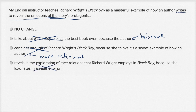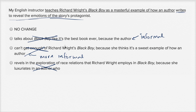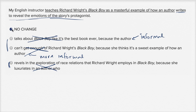The best tone is the original: My English instructor teaches Richard Wright's Black Boy as a masterful example of how an author writes to reveal the emotions of the story's protagonist. The grammar isn't incorrect in any of these choices — it's more about tone. We want to hit the tone that's not too informal like the second and third choices, and not too formal or overly complex like the fourth. So I like it the way that it's written.